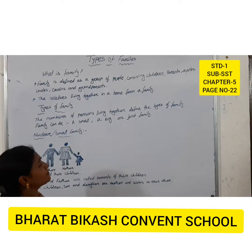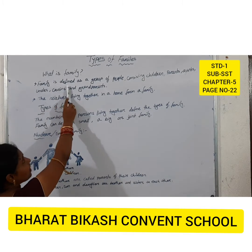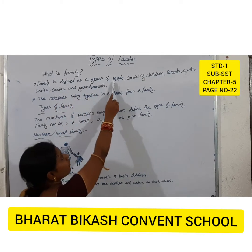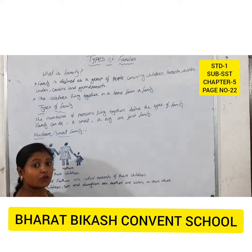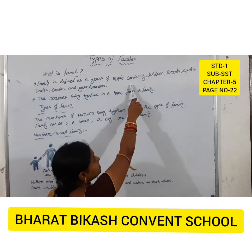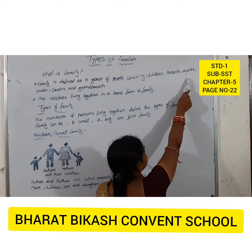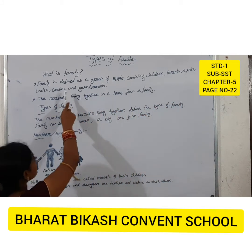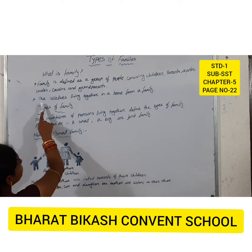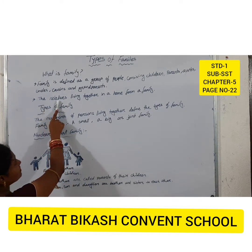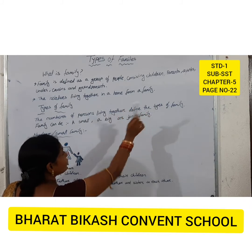What is family? Family is defined as a group of people consisting children, parents, aunts, uncles, and grandparents.